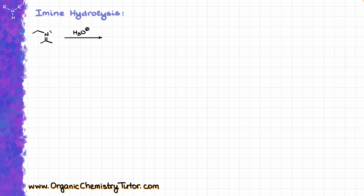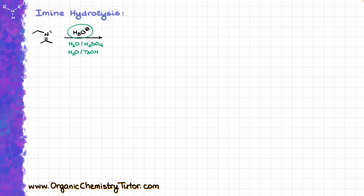For simplicity's sake, I'm going to be using H3O+, which is just a generic abbreviation for an aqueous solution of some sort of acid. Instead of H3O+, you might see something like water and sulfuric acid, or water and tosylic acid, or even water and HCl, hydrochloric acid. The nature of the acid is completely irrelevant — all of them are going to be giving us H3O+, and that is what we are going to be using for this reaction.